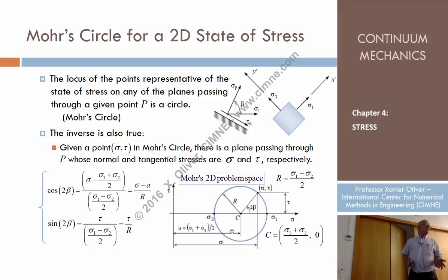So this is a graphical construction that provides me the two sides of the problem. How to compute, given the Mohr circle, which can be computed if I know the principal stresses. If I know the principal stresses, how would I construct the Mohr circle? I put the center in the half point, and I trace a radius which is half the value of the difference.